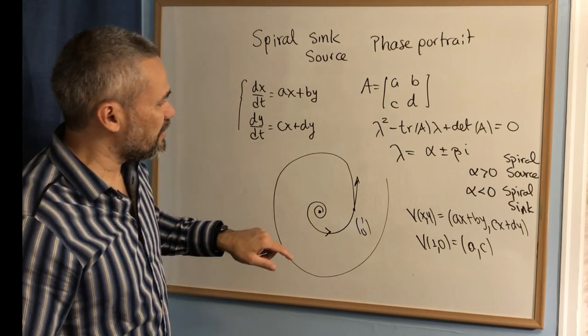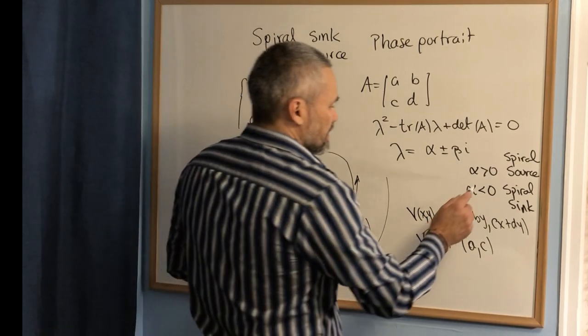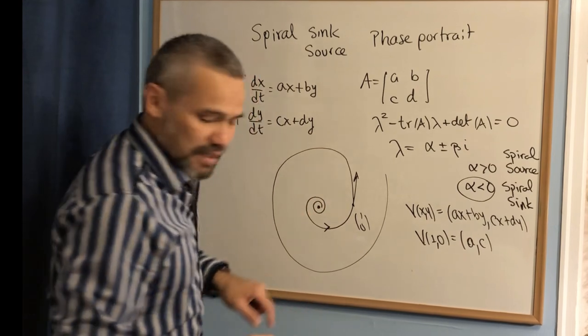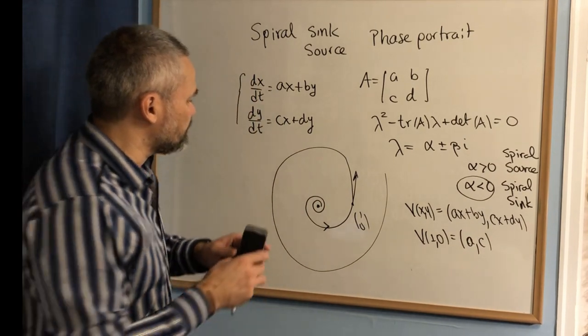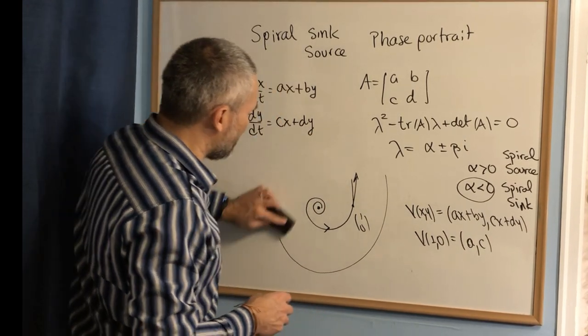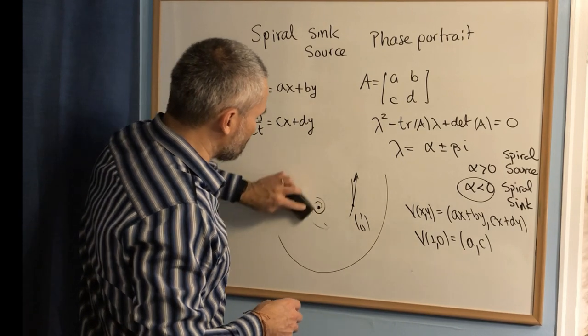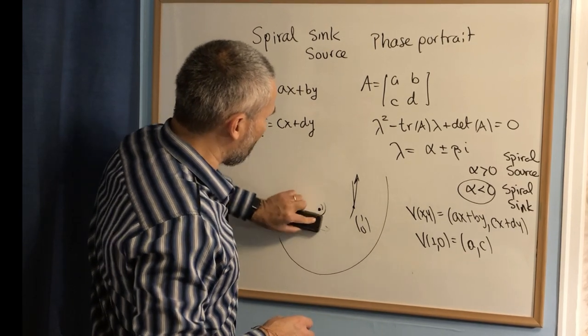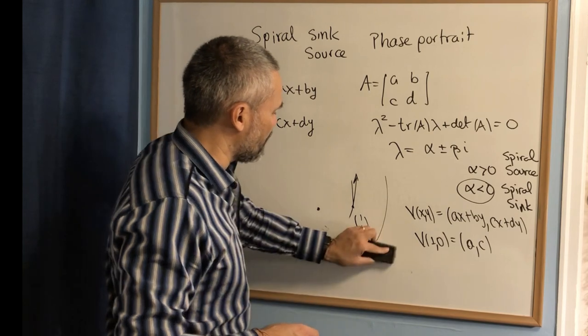But if you know that alpha is smaller than zero, then we know that when t goes to infinity, the orbit goes toward the origin.